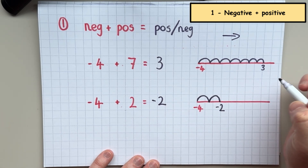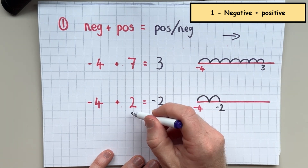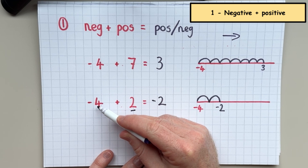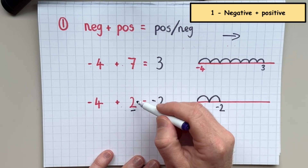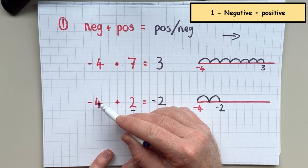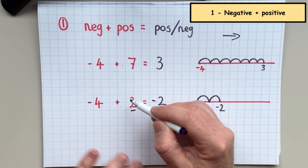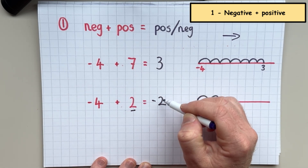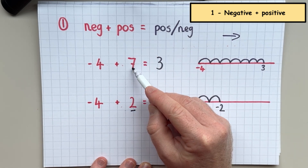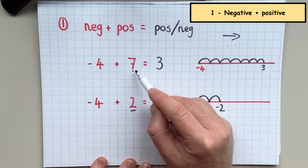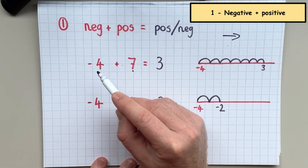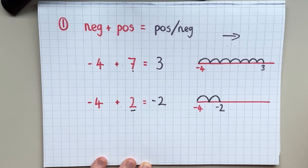The general rule is: if the number being added is smaller than the starting number — and by smaller I mean ignoring the sign, so two is smaller than four — then you will get a negative answer. If the number on the right is bigger than the number on the left, then you will finish with a positive answer.